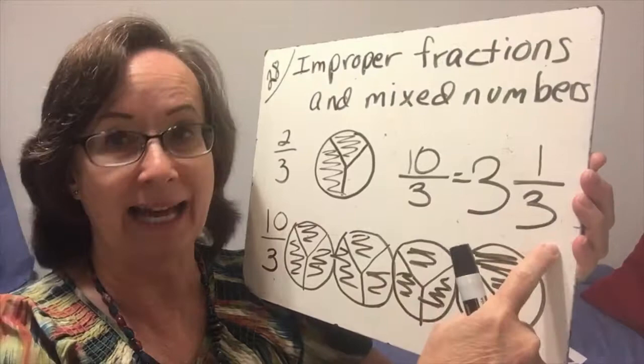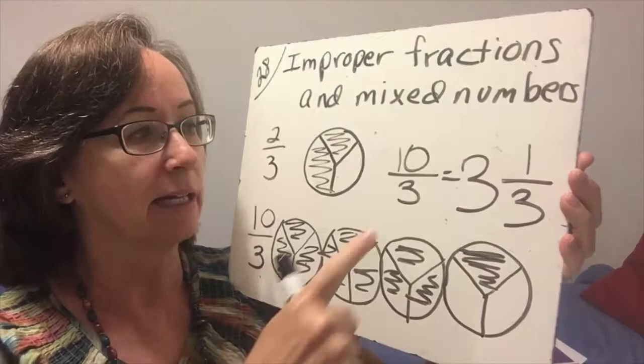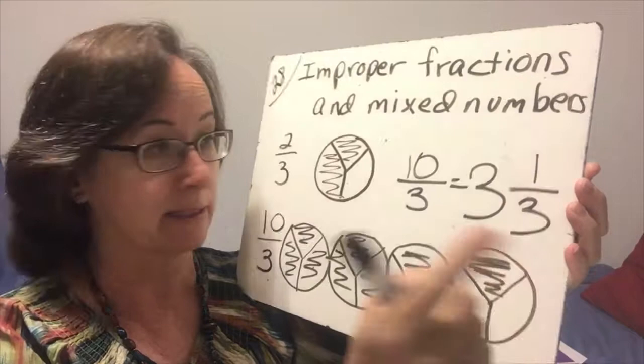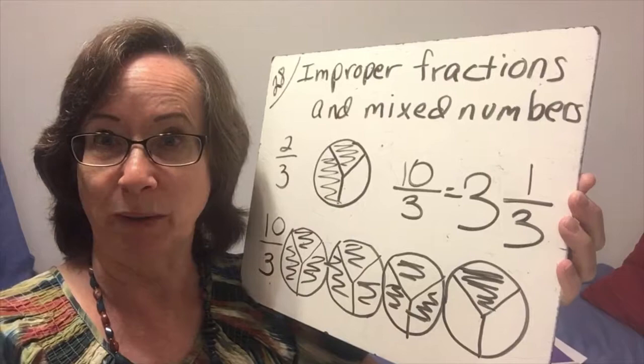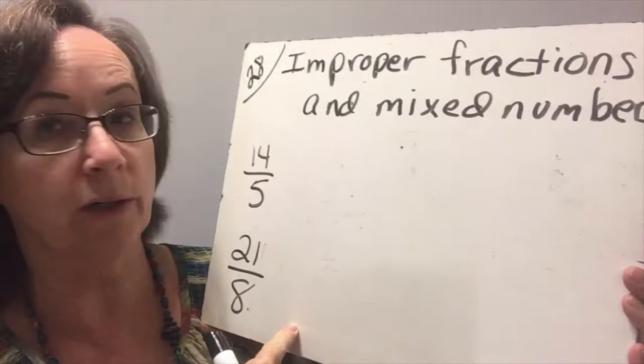So 3 and 1 third is actually the same thing as 3 holes plus 1 third left over. And so now we're going to practice going from improper fractions to mixed numbers. We might as well practice going from mixed numbers to improper fractions because we have to do it both ways sometimes. So on these two, we're converting an improper fraction to a mixed number.